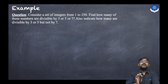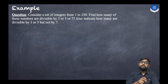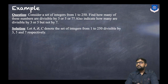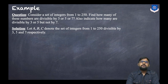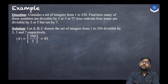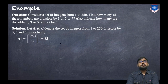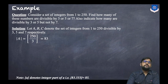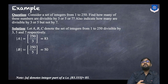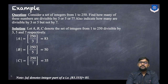Consider integers from 1 to 250. Find how many are divisible by 3 or 5 or 7, and how many are divisible by 3 or 5 but not 7. Let A, B, C denote integers from 1 to 250 divisible by 3, 5, and 7 respectively. Then |A| = ⌊250/3⌋ = 83, |B| = ⌊250/5⌋ = 50, and |C| = ⌊250/7⌋ = 35.